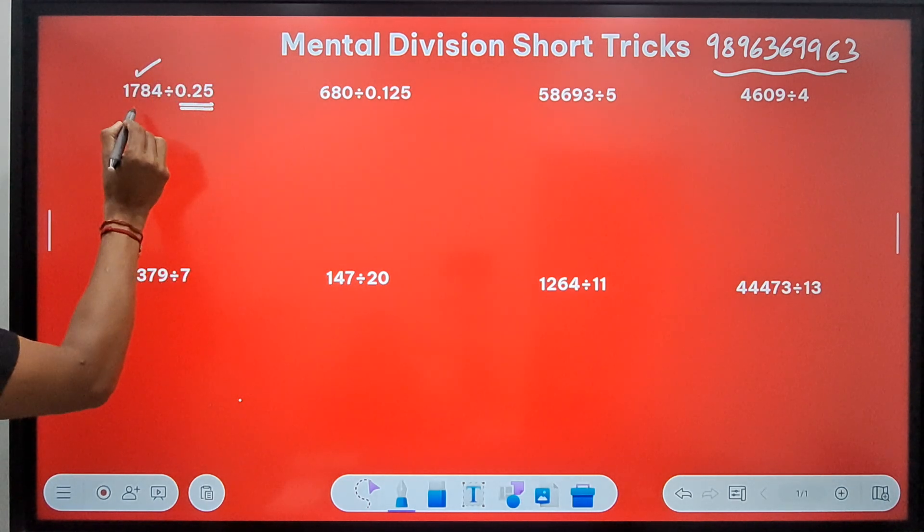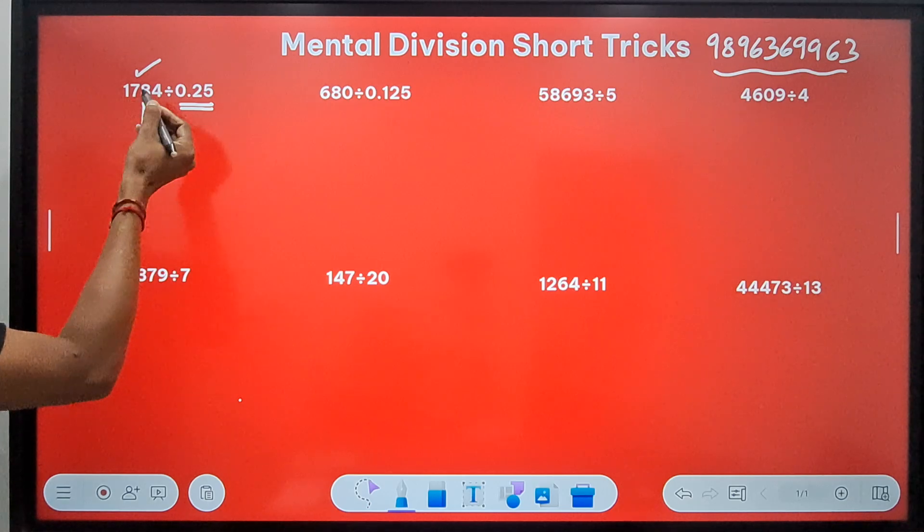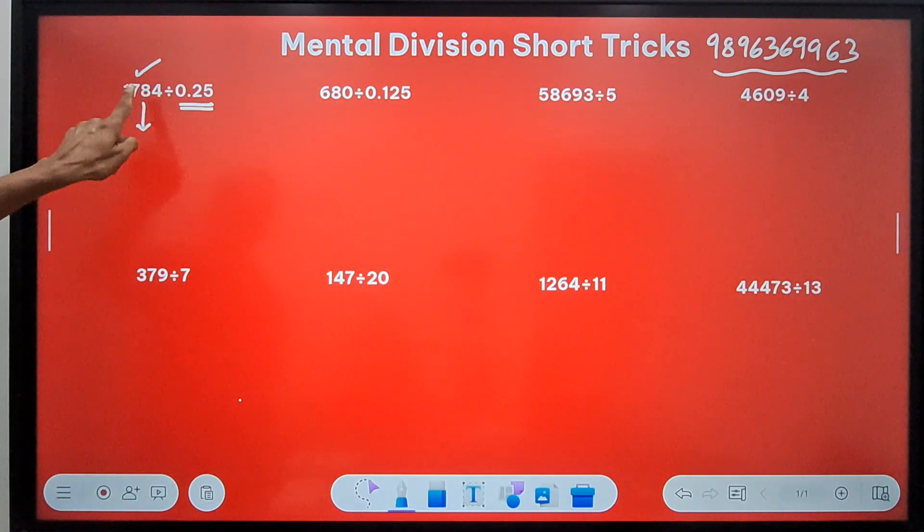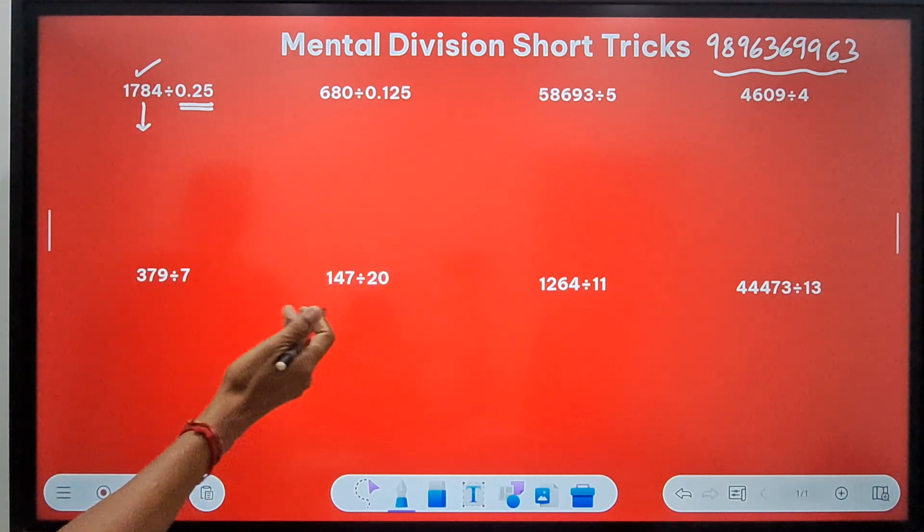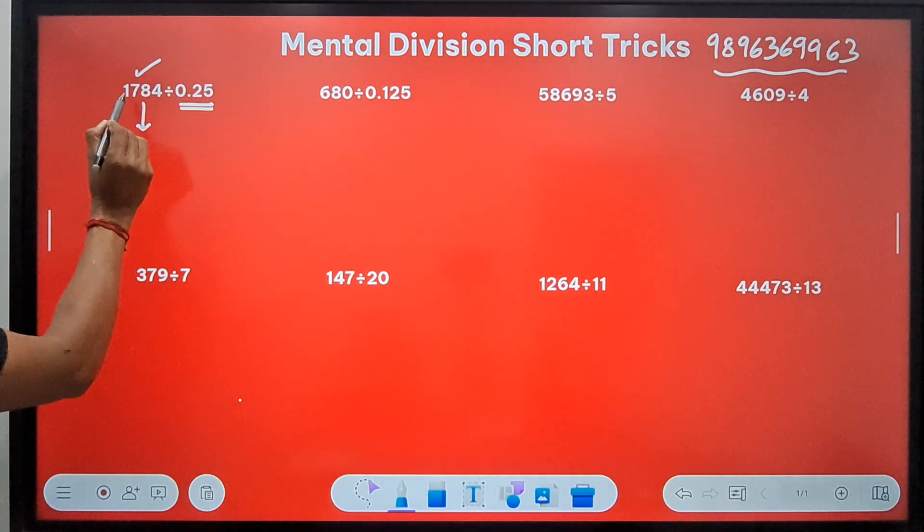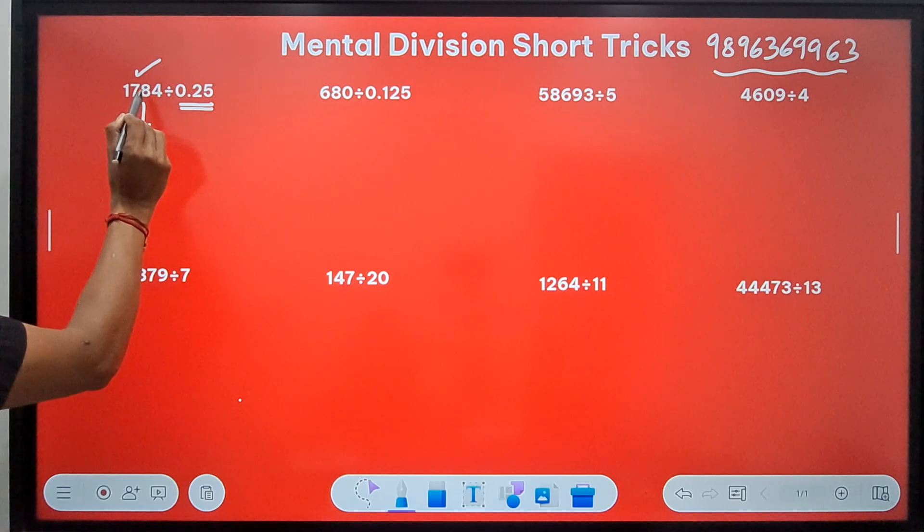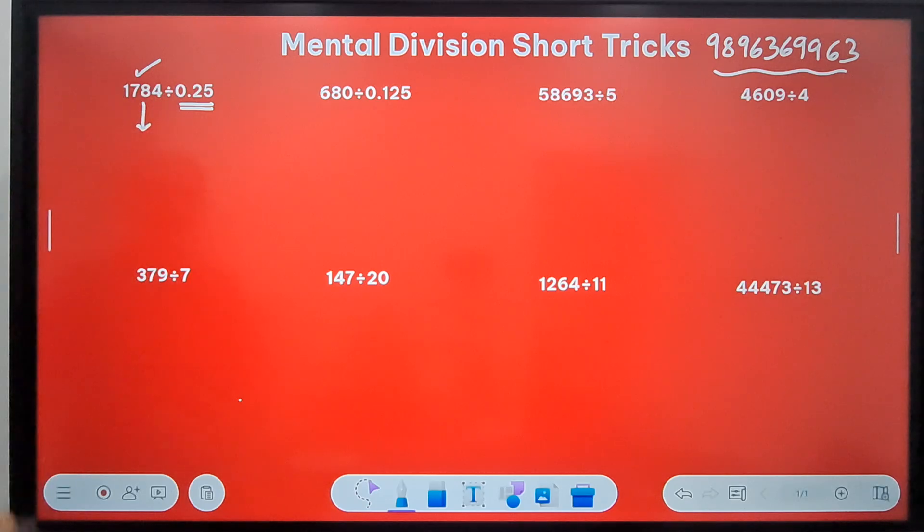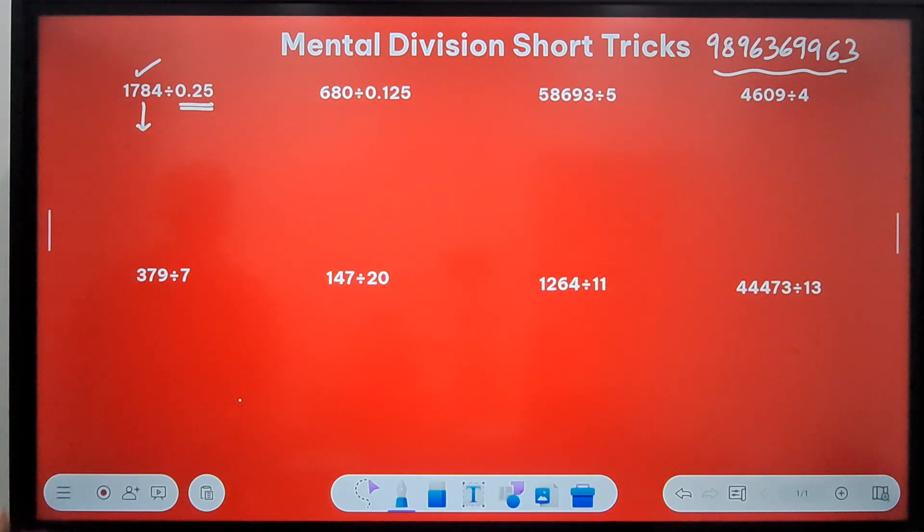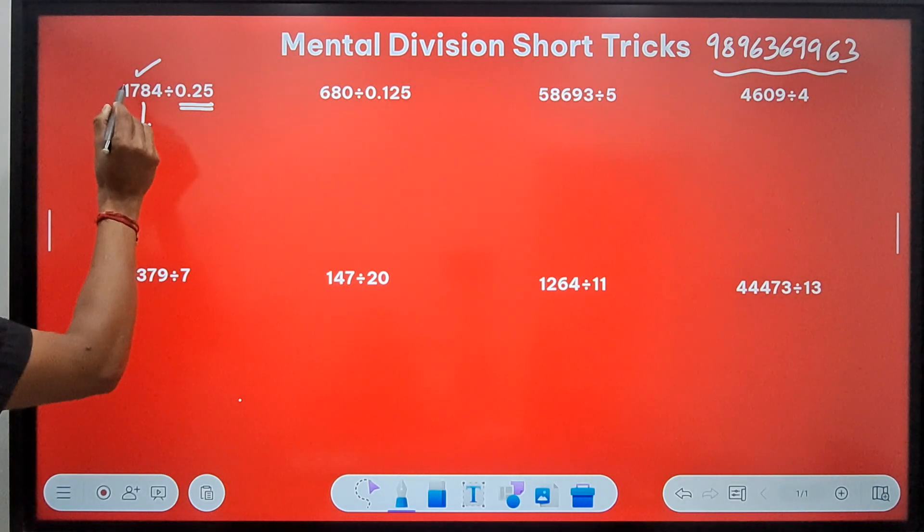When you divide any number by a quarter, that means you have to double this number twice—multiply this number by 4. When you multiply that number by 4, you should know the trick of doubling the numbers. The double of 17 is 34, and the double of 84 is 168.